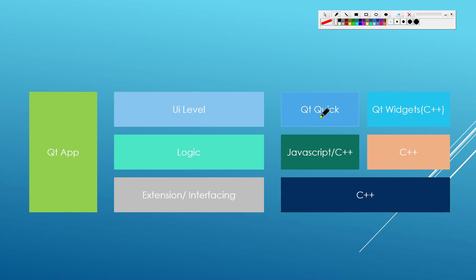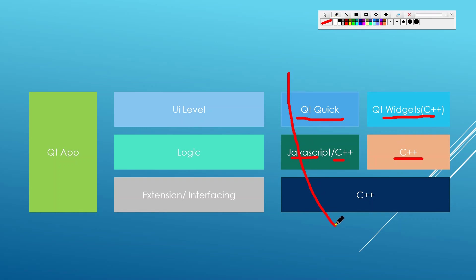Here is another way to understand what Qt has to offer. We have two ways to write graphical user interfaces: Qt Quick or Qt Widgets. For Qt Quick applications, you can use JavaScript for logic, or interface to C++. For Qt Widgets, you use C++. And if you want to take advantage of what's available on the C++ side, you can interface from Qt Quick to C++, or directly use C++ from Qt Widgets.